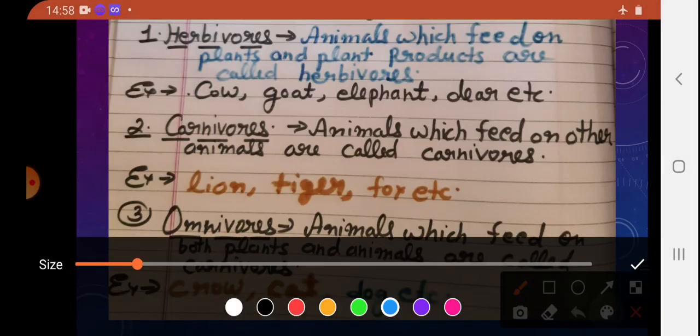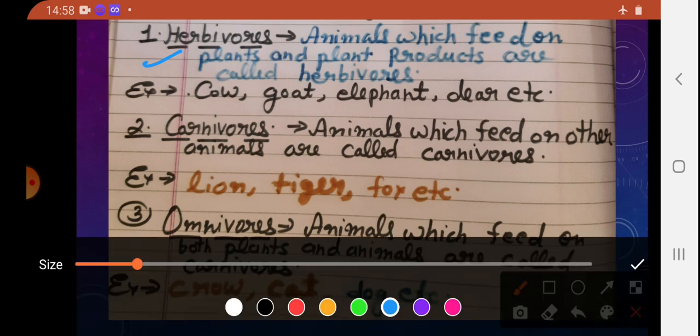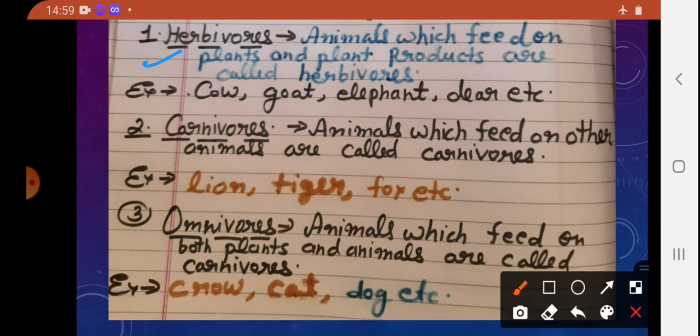This is the next slide. First category: Herbivores. Animals which feed on plants and plant products are called herbivores. Examples include cow, goat, elephant, and deer. You can see on the screen.